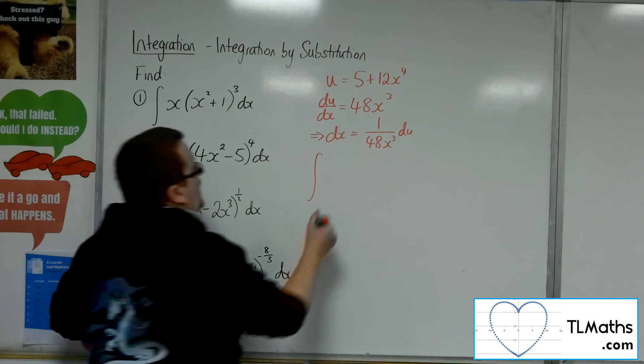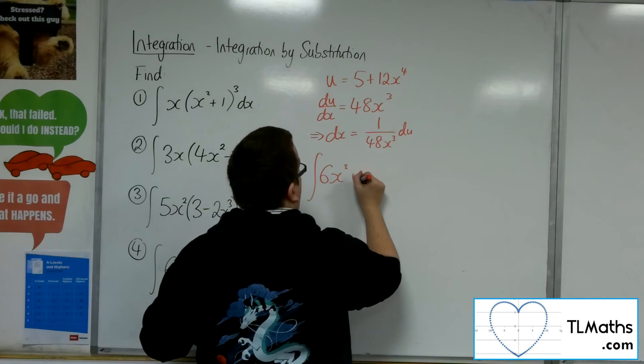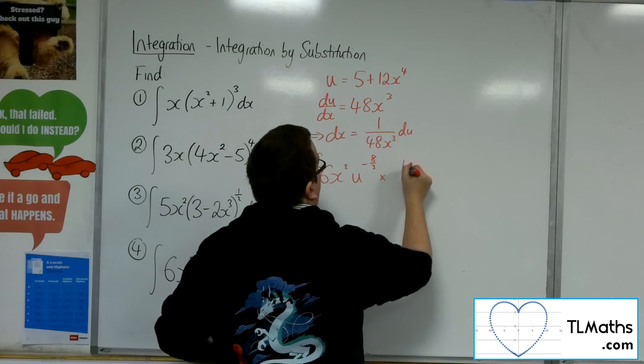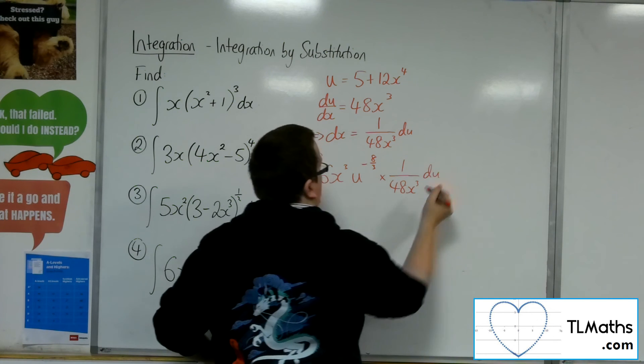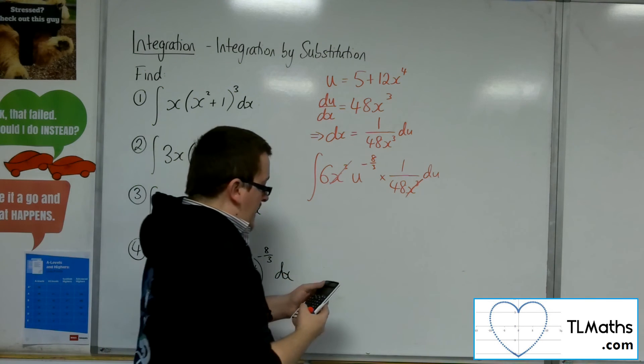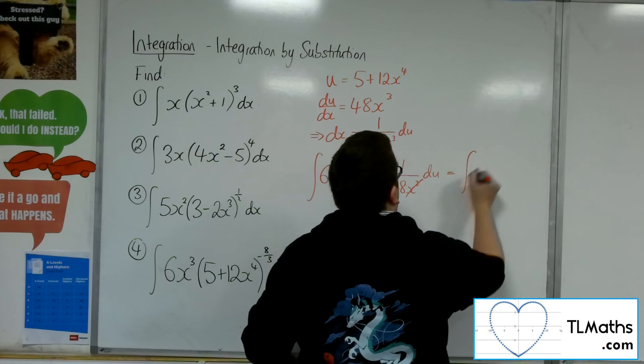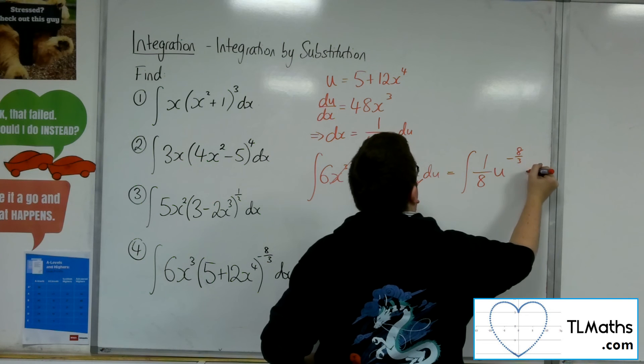We've got 6x cubed times u to the minus 8 thirds times this. The x cubes cancel. We've got 6 over 48, which is 1 eighth. That's the integral of 1 eighth u to the minus 8 thirds du.